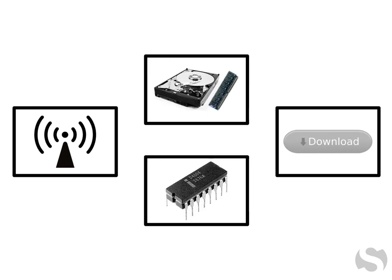Data streamed to a computer via Wi-Fi with incoming data uploaded to the hard drive, entered onto random access memory or RAM for immediate use, or sent to the microprocessor or CPU for integration and interpretation. Data go back and forth between the memory components and the microprocessor.